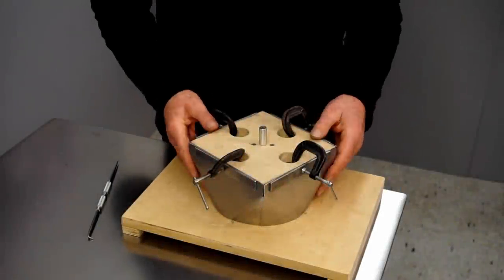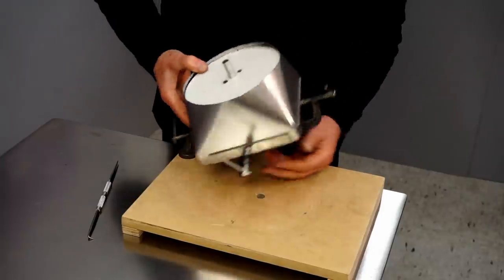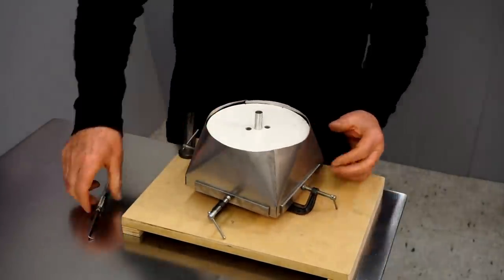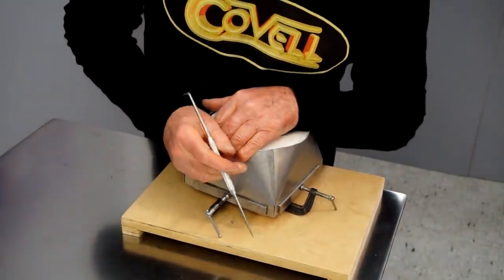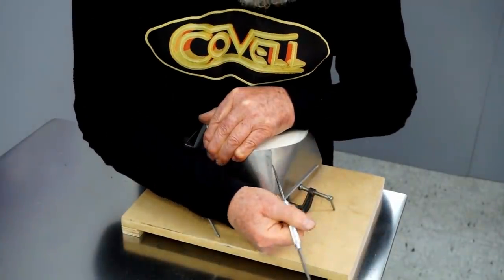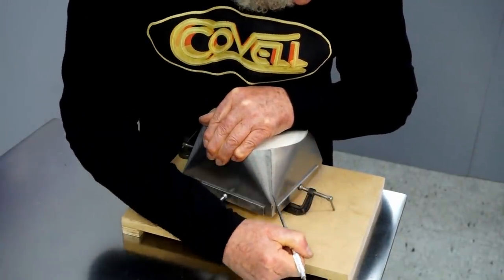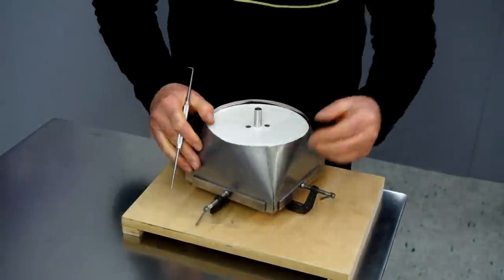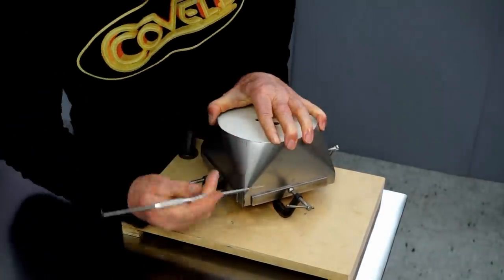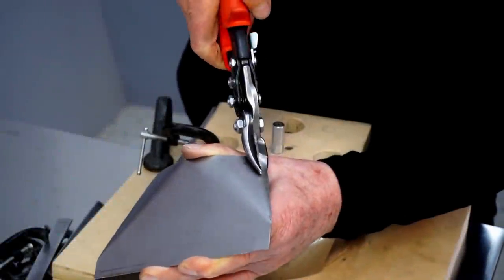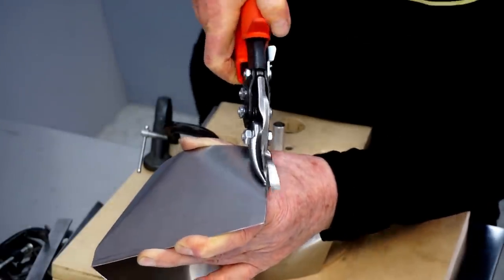Everything's clamped up tightly to the form, and I'm very happy with how things are fitting together. So now is the time that we'll scribe these edges for the final trimming. So I'll pull everything up tight, scribe one line on both sides. So now I'll trim it for the final time, and we'll tack weld the parts together.